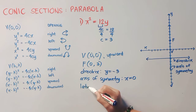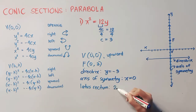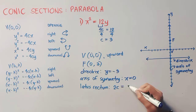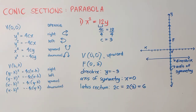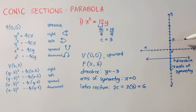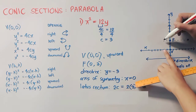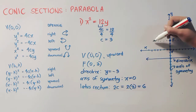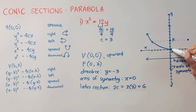Next is the latus rectum, given by the formula 4c. To get half of it, we use 2c. So 2 × 3 = 6. Counting 6 units from the focus to the right gives the endpoint (6, 3), and 6 units to the left gives (−6, 3). We then create the parabola from the vertex going through the endpoints of the latus rectum. This is our final graph.